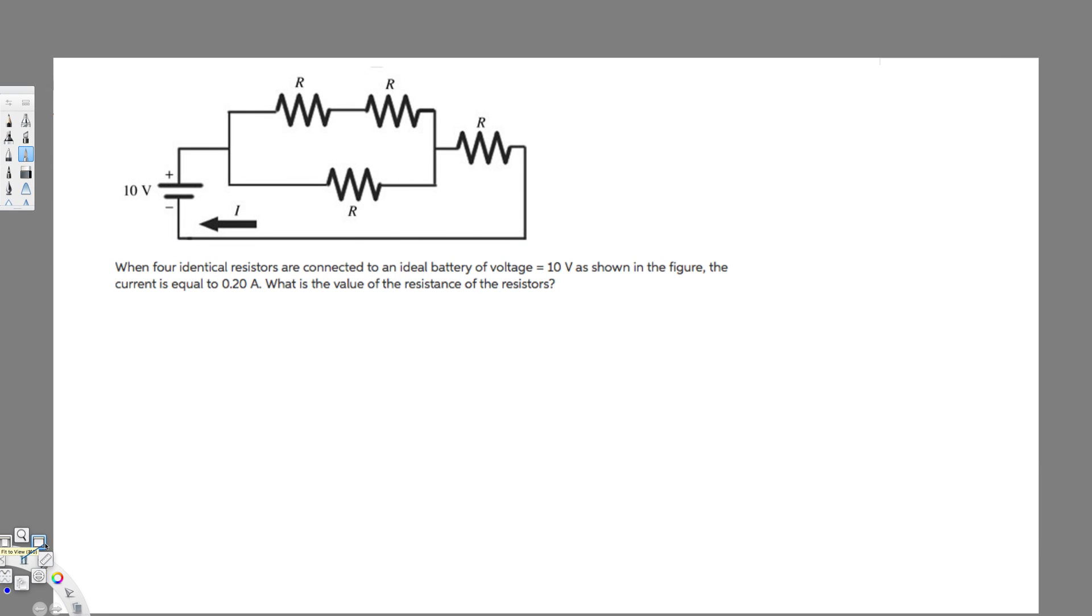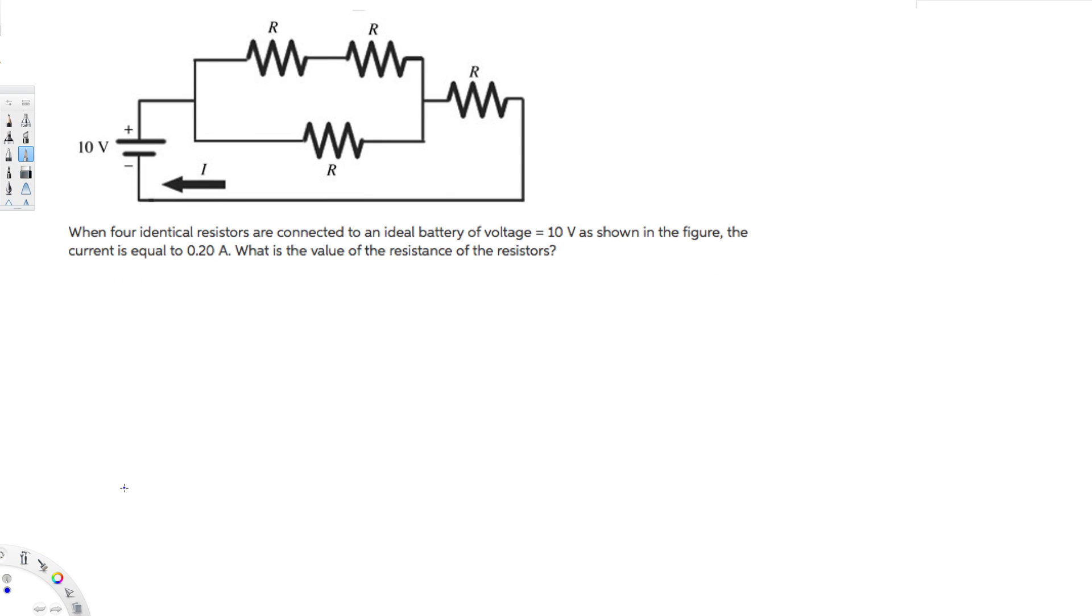What's going on guys, let's do this problem right here. The question is asking when four identical resistors are connected to an ideal battery of voltage 10 volts as shown in the figure, the current is equal to 0.2 ampere. What is the value of the resistance of the resistors?